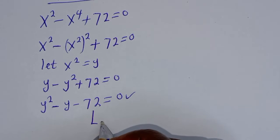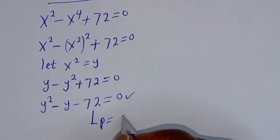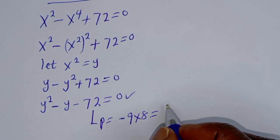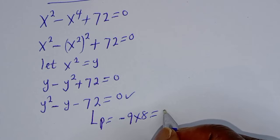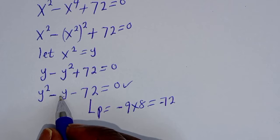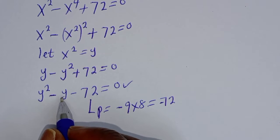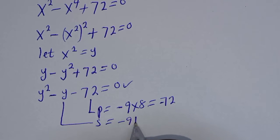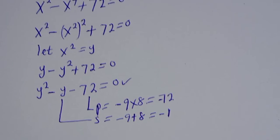The product is equal to minus 9 multiplied by 8, which equals minus 72. The coefficient of y is minus 1, which will be the sum. S is equal to minus 9 plus 8, which equals minus 1.